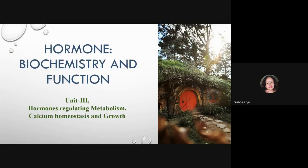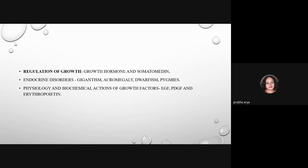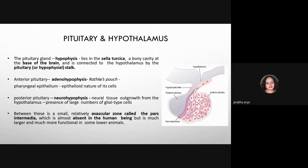In this class on hormone biochemistry and function, we will study the regulation of growth with growth hormone and somatomedins. Growth hormone is secreted from the pituitary gland, located in the sella turcica bone cavity at the base of the brain. This gland has two portions: the adenohypophysis, also called the anterior pituitary, and the neurohypophysis, the posterior pituitary. In some animals, there is also a zone called the pars intermedia between these two portions.